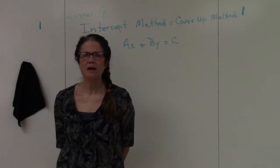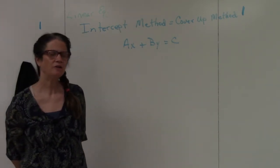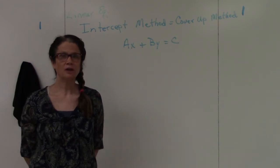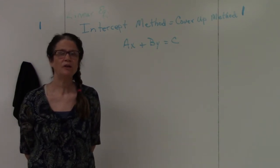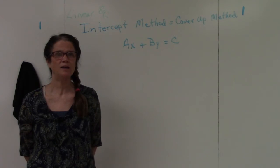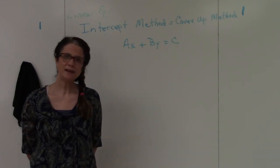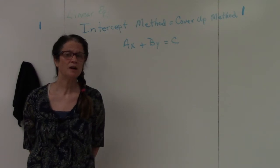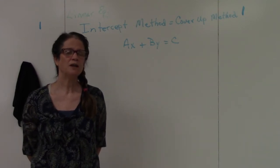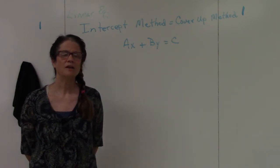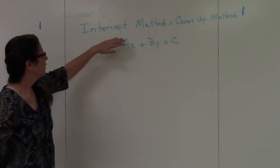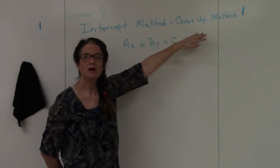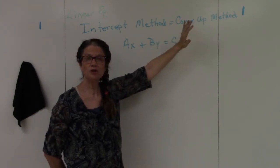We talked about graphing a line using the slope-intercept method — that's one way to graph, and you use it when you have an equation set up as y equals mx plus b. The second method, which we'll use for the most part in 1324, is called the intercept method, or what I like to call the cover-up method.